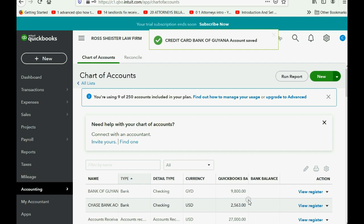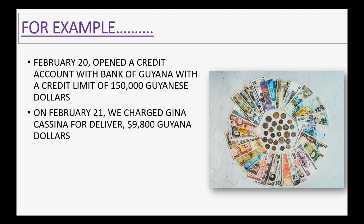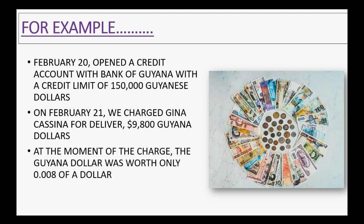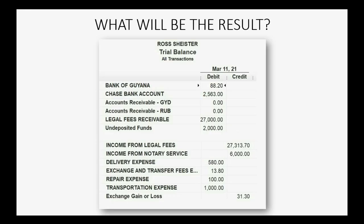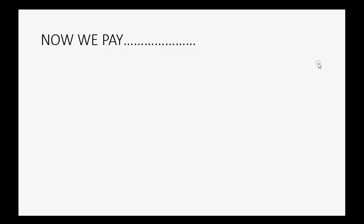The exchange rate is not necessary when you're only creating the account. Now let's imagine on February 21 we charge Gina Casina for delivery: 9,800 Guyana dollars. At the moment of the charge, the Guyana dollar was worth only 0.008 of the US dollar back on February 21, 2021. The result is a delivery expense recorded to the Guyana credit card.